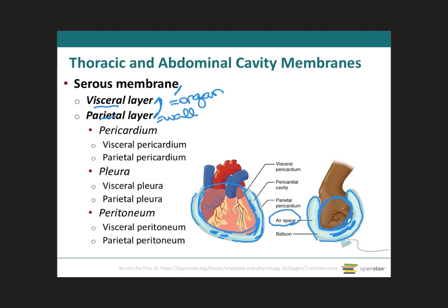Depending on which cavity the serous membrane is located in, it receives a different name. The heart is located in the pericardial cavity, and the membrane lining this cavity is called the pericardium. It is divided into visceral pericardium, which is in contact with the heart, and parietal pericardium, which is in contact with the pericardial wall.